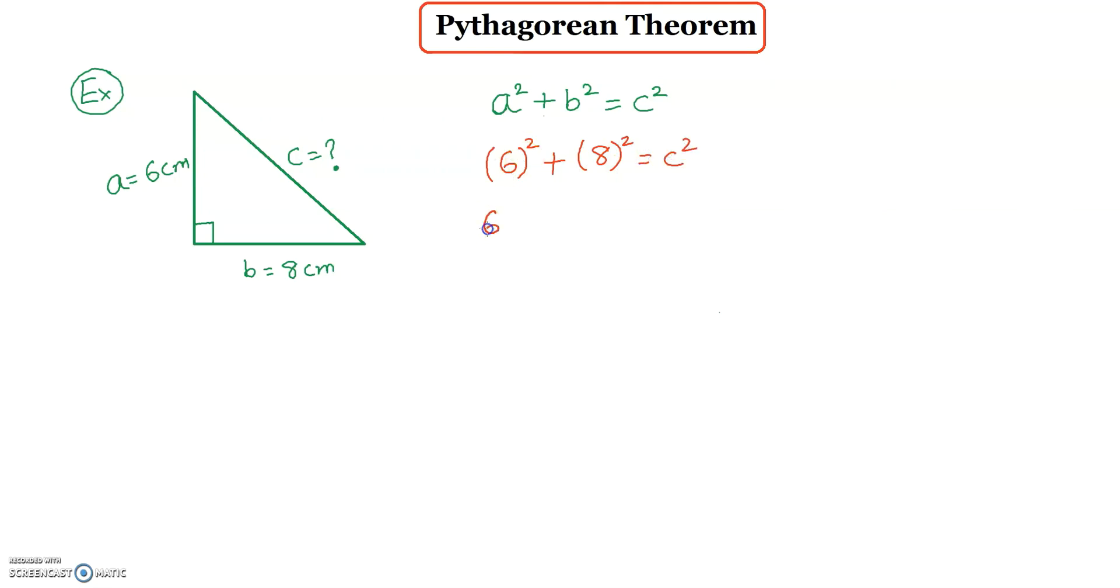6 squared means 6 times 6. 8 squared means 8 times 8 is equal to c squared. 6 times 6 is 36. 8 times 8 is 64 is equal to c squared. When I add 36 and 64 I get 100.